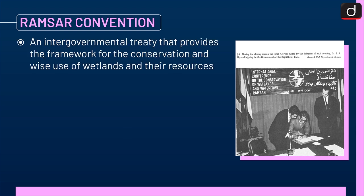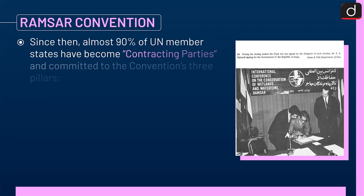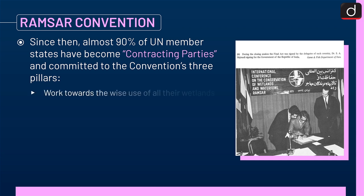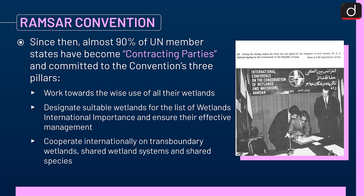Now let's discuss the Ramsar Convention. It is an intergovernmental treaty that provides the framework for the conservation and wise use of wetlands and their resources. It was adopted in the Iranian city of Ramsar in 1971 and came into force in 1975. Almost 90% of UN member states have become contracting parties and committed to the convention's three pillars: work towards the wise use of all their wetlands; designate suitable wetlands for the List of Wetlands of International Importance and ensure their effective management; and cooperate internationally on transboundary wetlands, shared wetland systems, and shared species.